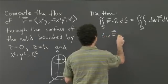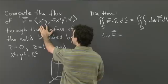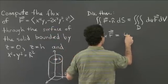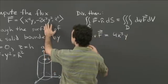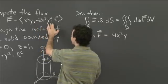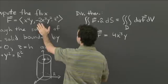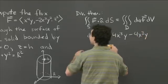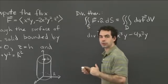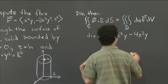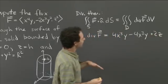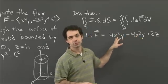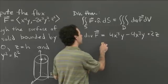So div F: we need to take the partial of the first component, x to the fourth y, with respect to x. That's 4x cubed y. Then the second component, minus 2x cubed y squared, with respect to y — that's minus 4x cubed y. Then the last component, z squared, with respect to z — that's just 2z. We add them all together, and the first two cancel, so we just get 2z.